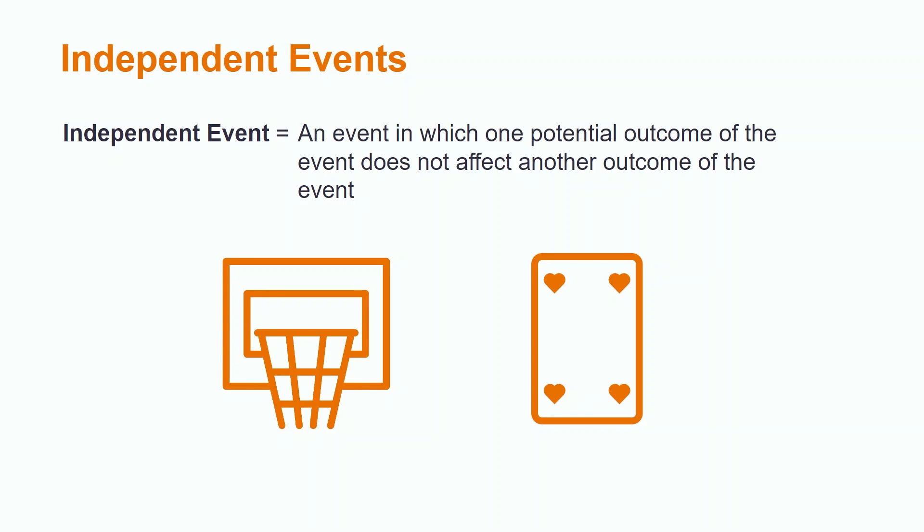However, let's say that we are given two chances to select a 4 of hearts. On our first pick, we have a 1 in 52 chance of getting the 4 of hearts. Additionally, if we were to select the 4 of hearts on our first try, it is impossible for us to pick it on our second try, since it has already been selected and there is only one 4 of hearts in a deck of cards.